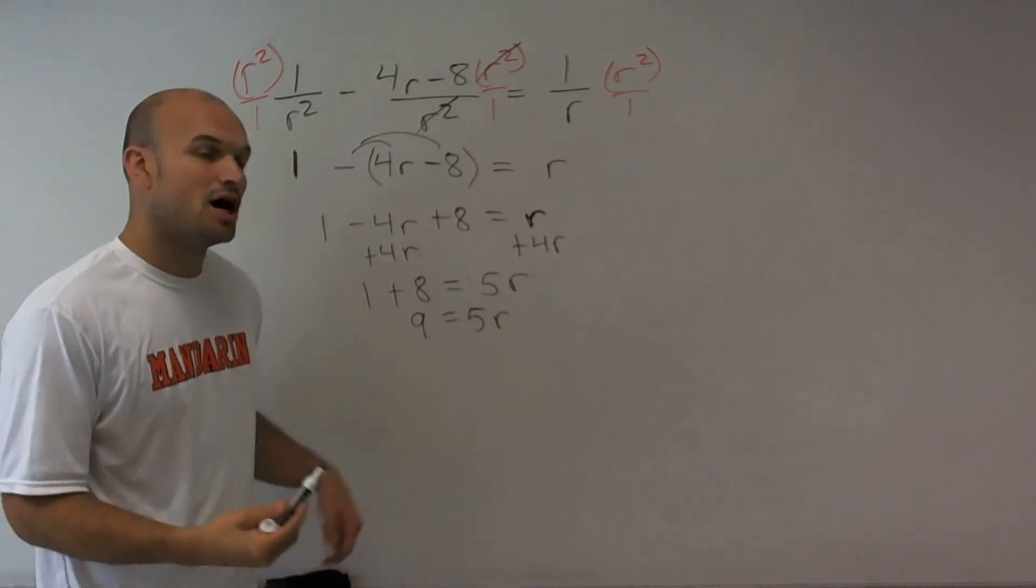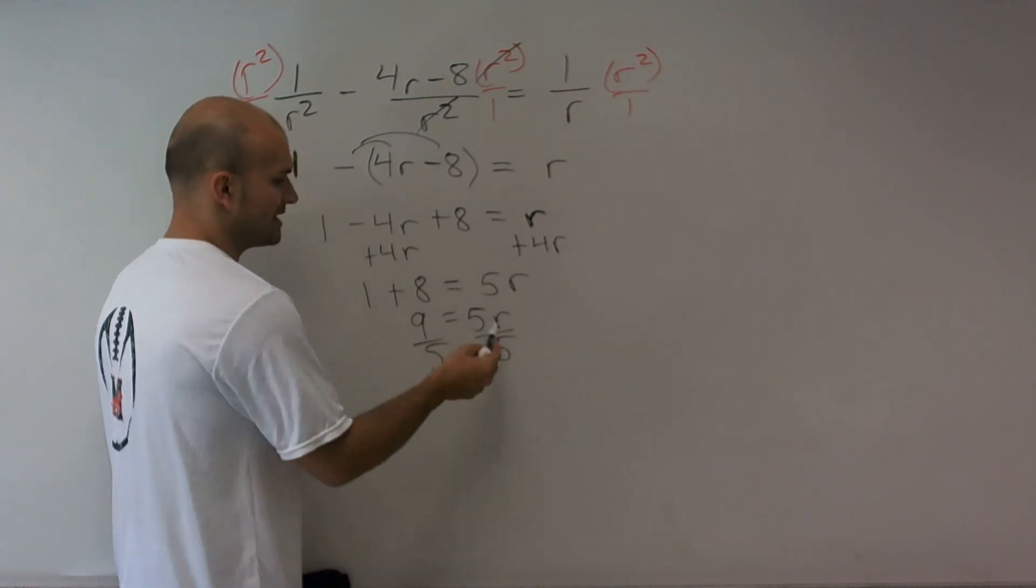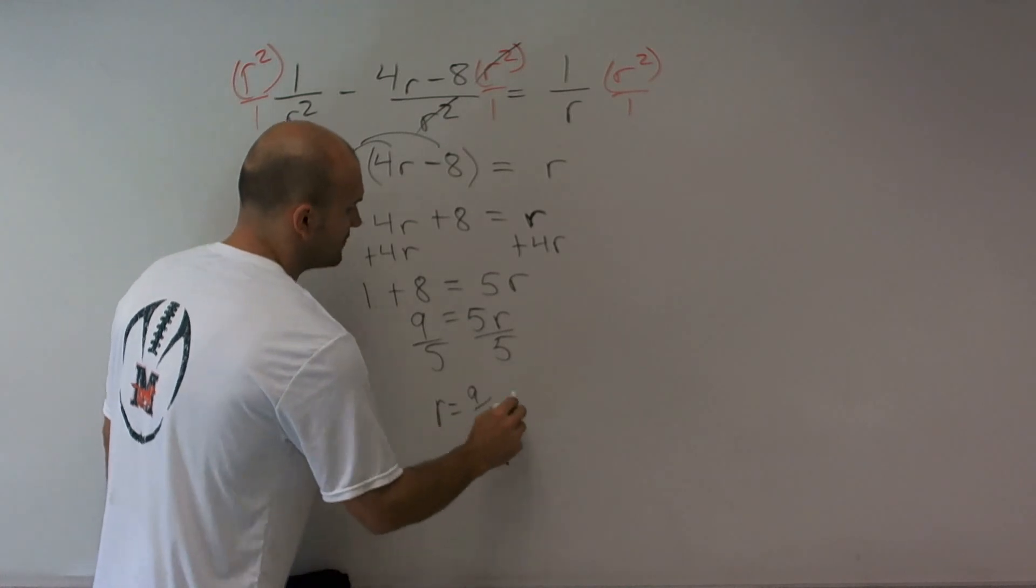And then to undo what's happening, what's being multiplied by my r, I'm going to divide by 5, so I get r is equal to 9 fifths.